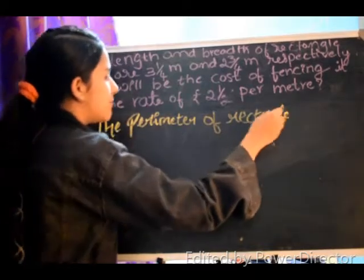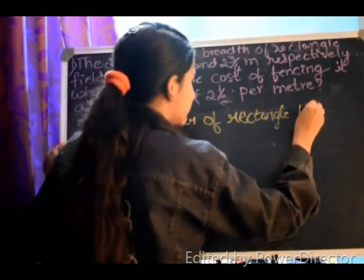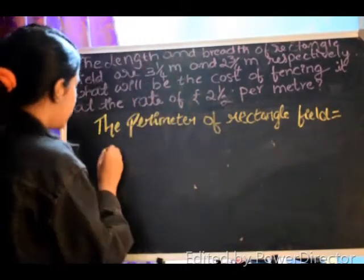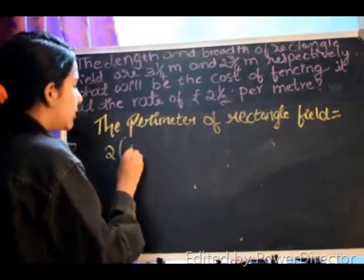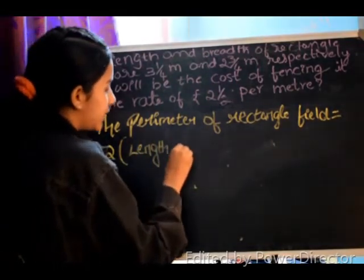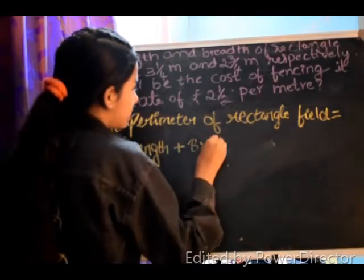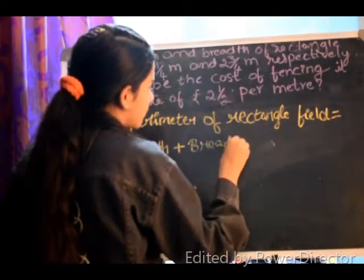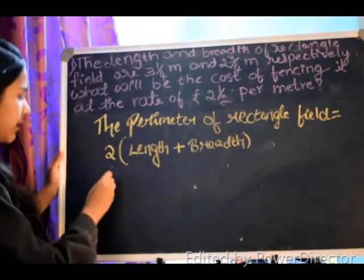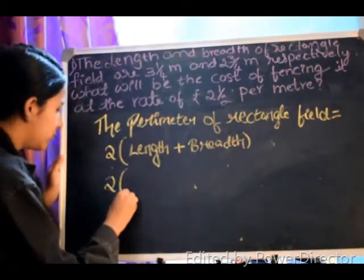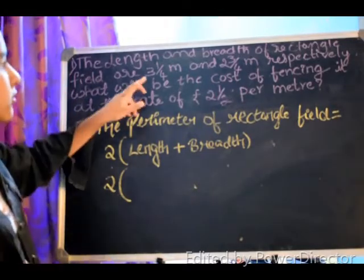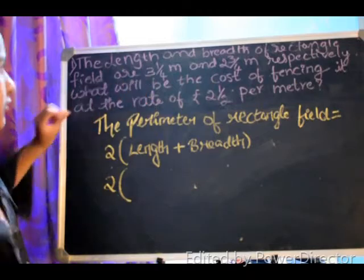The perimeter of rectangle field is equal to 2 into length plus breadth. According to the formula, we have to substitute the question. First we have to convert the mixed fraction into improper fraction.